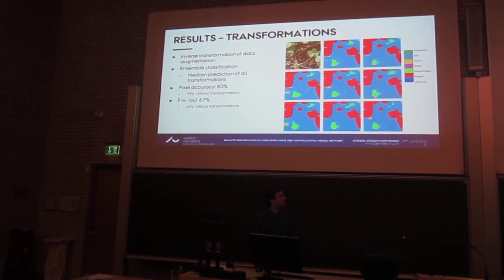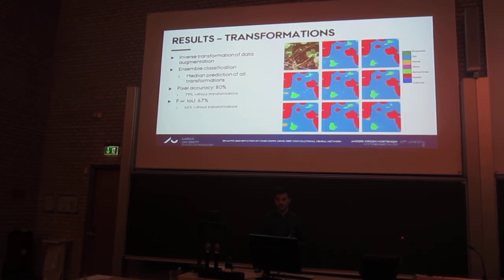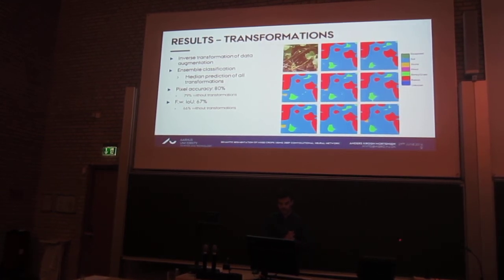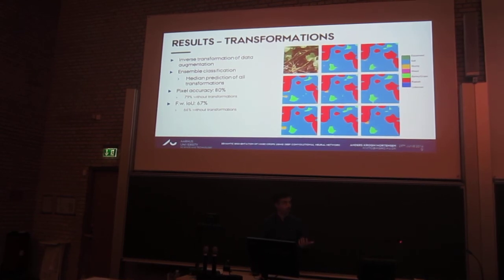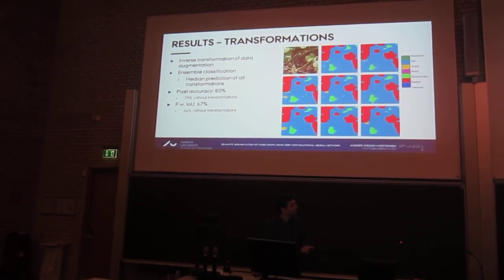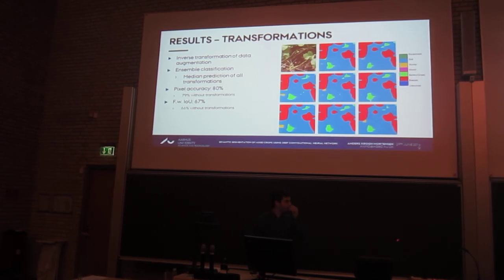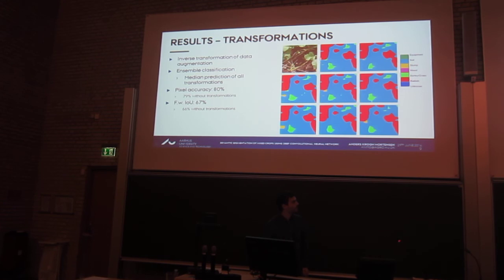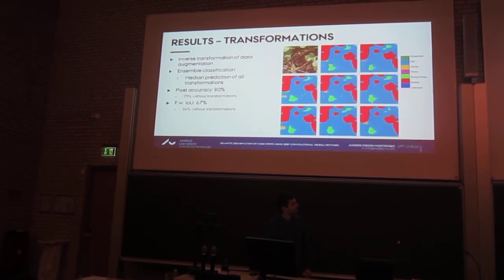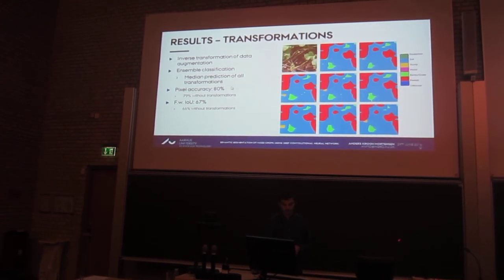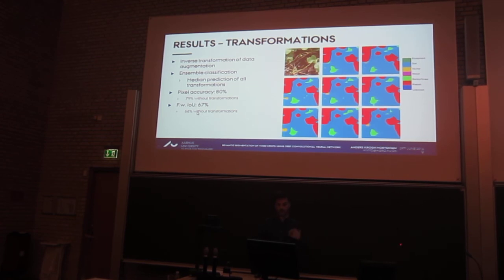If we take the transformations used during data augmentation and apply the inverse transformation after passing through the network, can they help improve our results? On the right you can see the original image, then each transformed version passed through the network, then the inverse transformation applied back. Overall they look similar — coarse radish leaf features and some grass — but there are minor differences. Taking the median prediction of all these gives a small increase of about 1% in both pixel accuracy and frequency-weighted intersection over union.